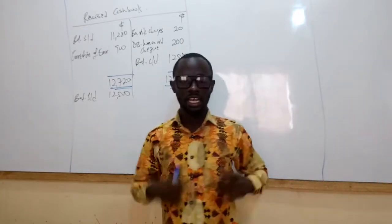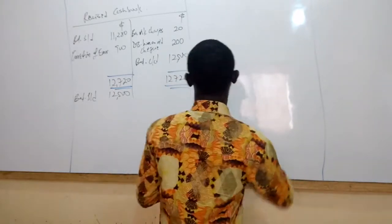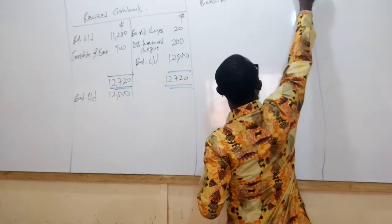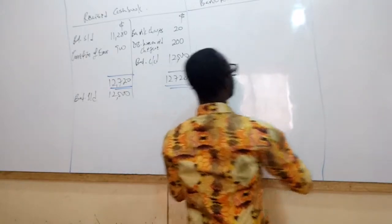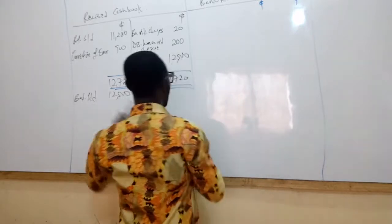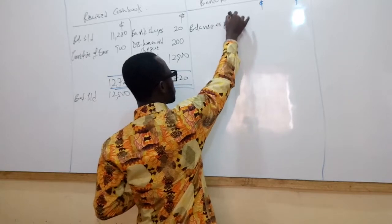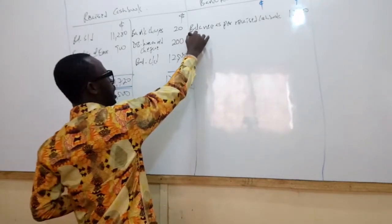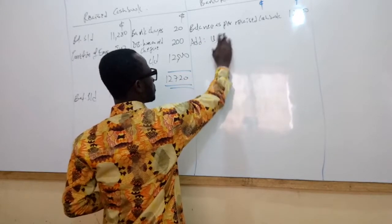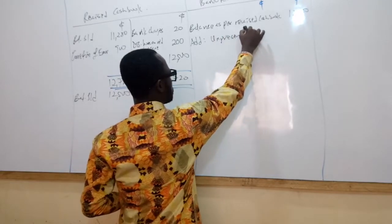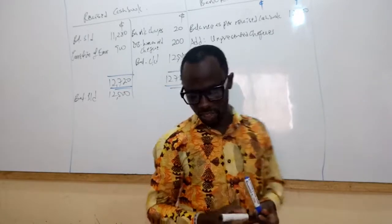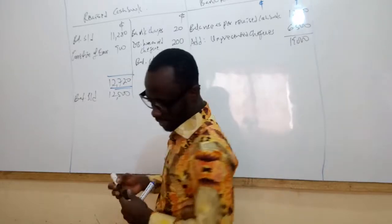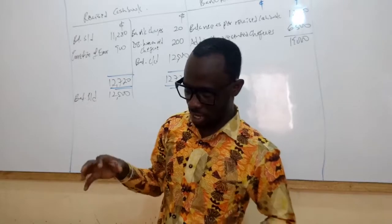Since the revised cash book has a debit balance, we use the first proforma for the bank reconciliation statement. In the bank reconciliation statement, two cash columns as always. We bring the balance as per revised cash book: $12,500. Then we add unpresented checks of $6,500. When we add those up, that gives us $19,000.